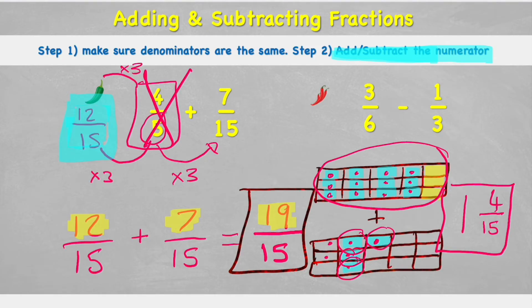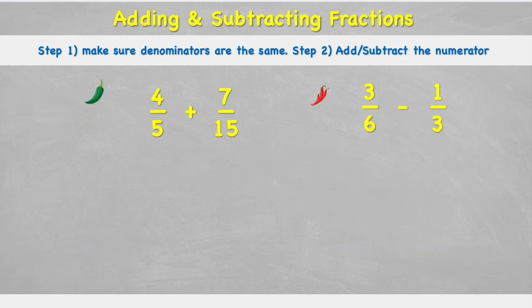Wow, loads going on there. Hopefully that's quite understandable. If not, go back and watch this again, it will make more sense the second time around. But let's try and use the quicker method now of just adding and subtracting the numerators with this second example.